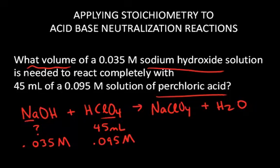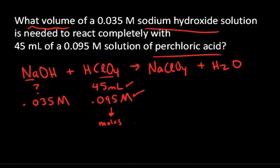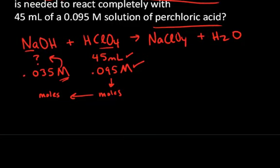To work this problem, since we're given a volume and a concentration in units of moles per liter, we can determine the number of moles of this reactant. Once we have the number of moles of one reactant, we can use stoichiometry to determine the number of moles of the other reactant, and then using the molar concentration, determine the unknown volume needed. That's going to be our conversion sequence.